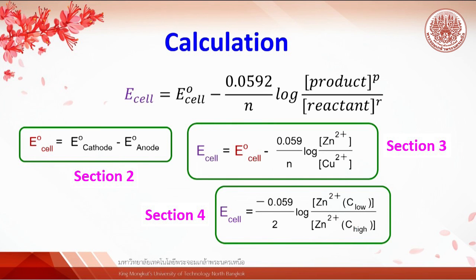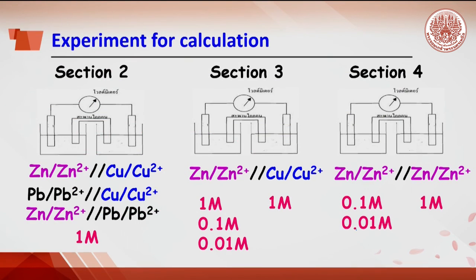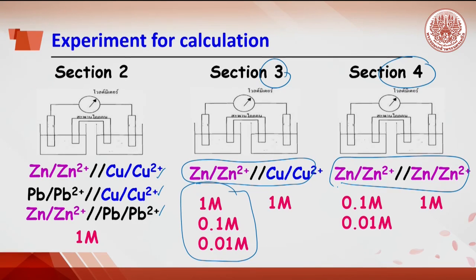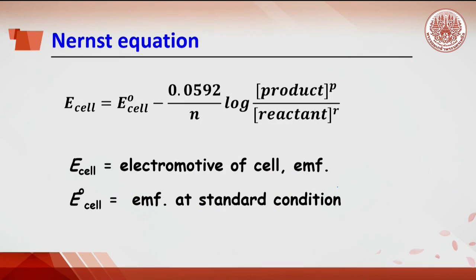Calculation: In Section 2, the electromotive force of each cell is investigated. In Section 3, only the galvanic cells of copper/copper ion and zinc/zinc ion are investigated to find the effect of zinc concentration on EMF. In Section 4, zinc concentration is investigated. In the calculation of EMF, only one equation is used — the Nernst equation.